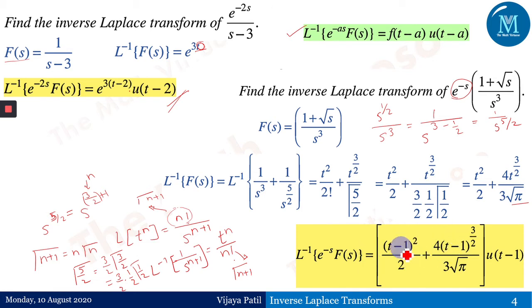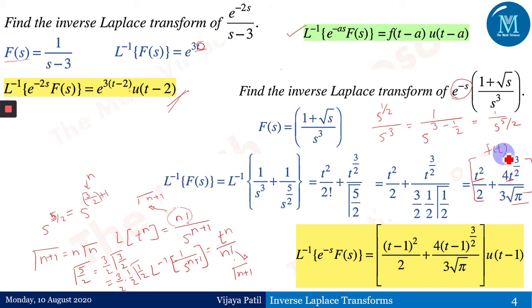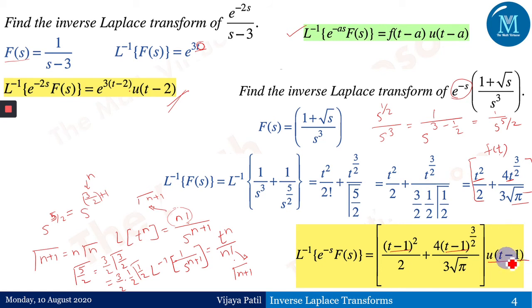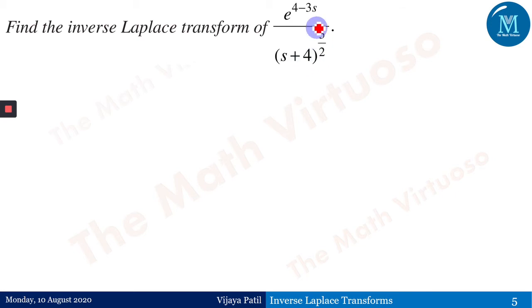Since we have e^(-s), the value of a is 1, so every t is replaced by (t-1). The final answer is: [(t-1)²/2 + (4/3)·(t-1)^(3/2)/√π]·u(t-1).